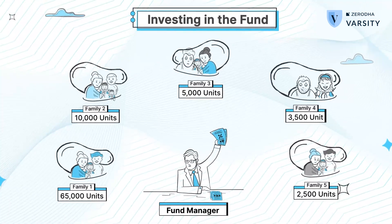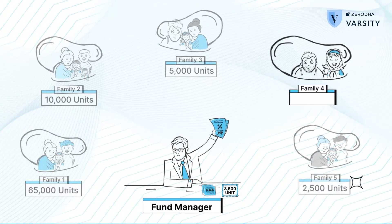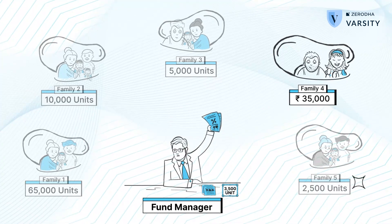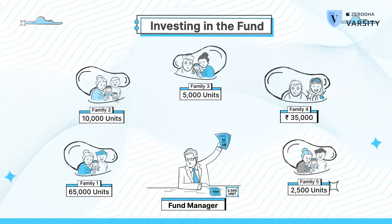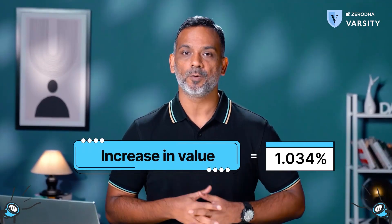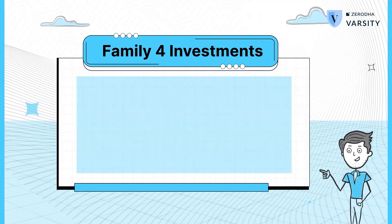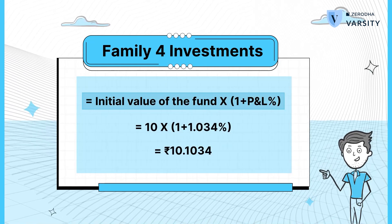Now here is an interesting bit. If family 4 wishes to withdraw by surrendering 3,500 units, each costing 10 per unit, then they will get back 35,000. But the fund manager has generated a profit, and this profit belongs to the families in the same proportion of their investment. So to distribute the profits in an equitable manner, the value of the units should increase proportionately — by 1.034%. If you do the math, the value of each notional unit is now 10.1034 and not rupees 10.